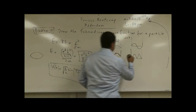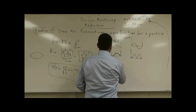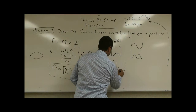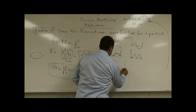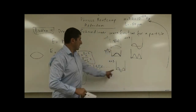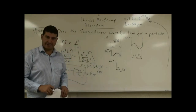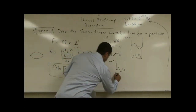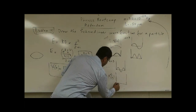In the n equals 3 state, it goes up, down, up, down — you fit a wavelength and a half. Then the probability density — you square that.